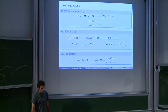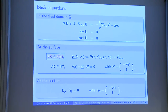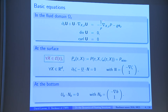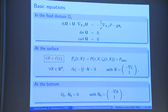What are the equations? Of course, these are the basic equations we have seen for the standard water waves. First, in the fluid domain, we have the Euler equation: the acceleration of the fluid particle, d_t u plus u grad u, is equal to the pressure forces, so minus 1 over rho times gradient of p, plus the force due to gravity. The fluid will be assumed to be incompressible and also irrotational.